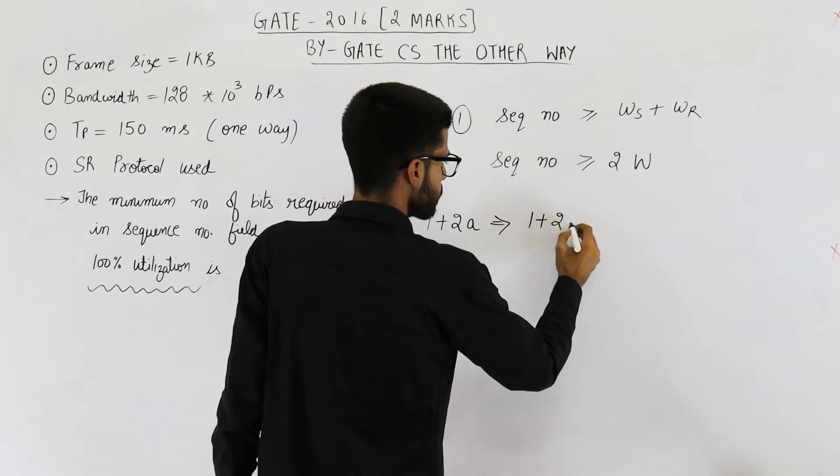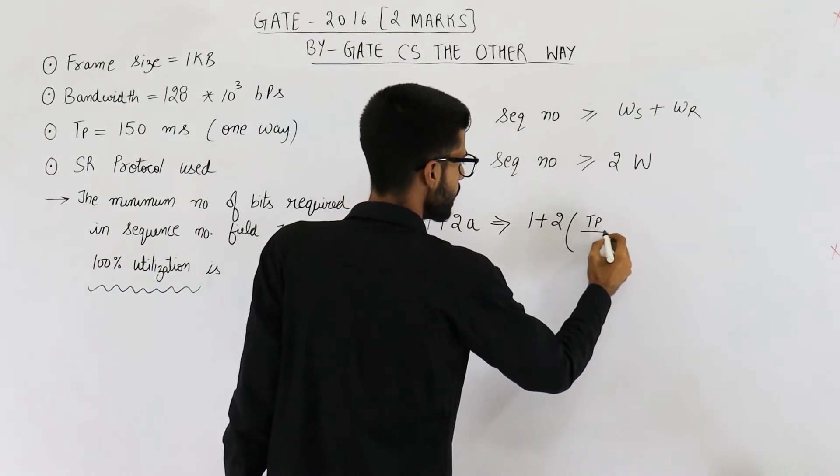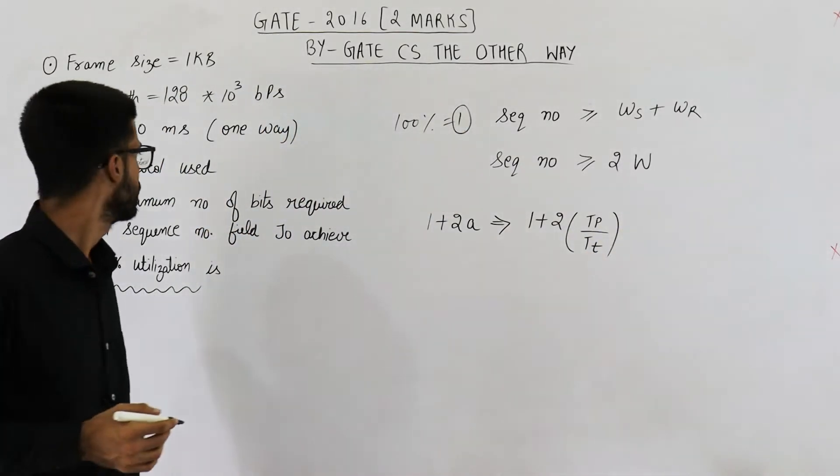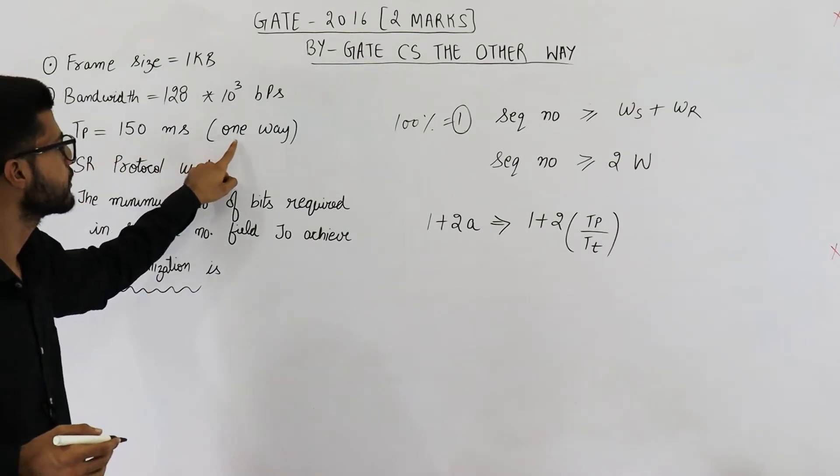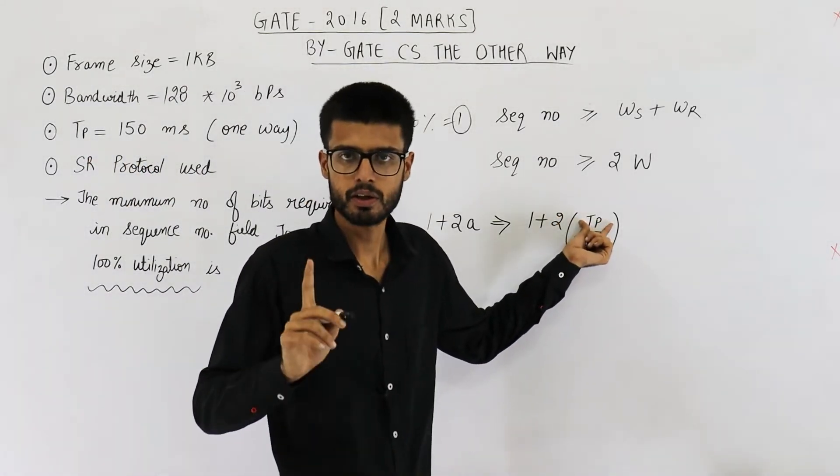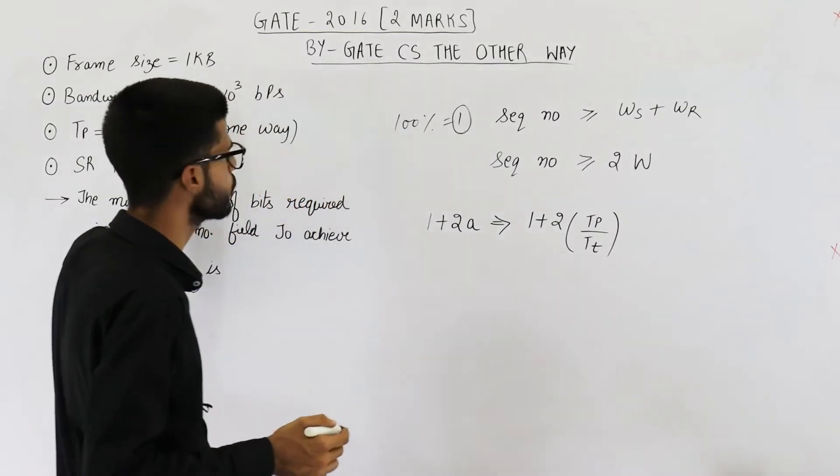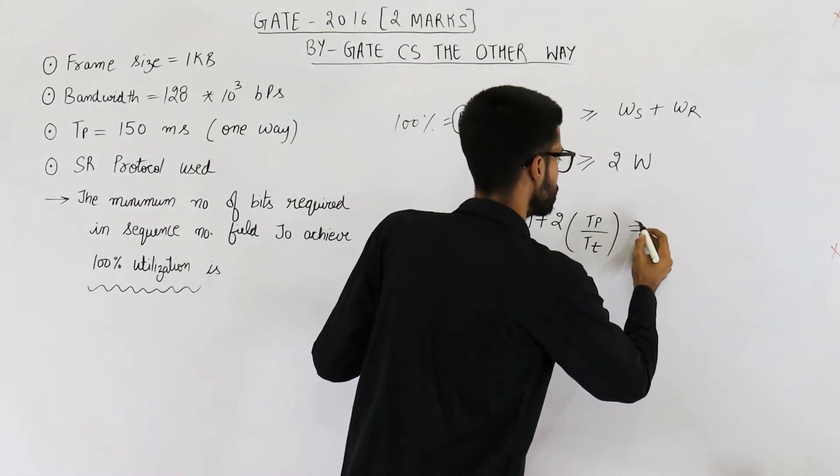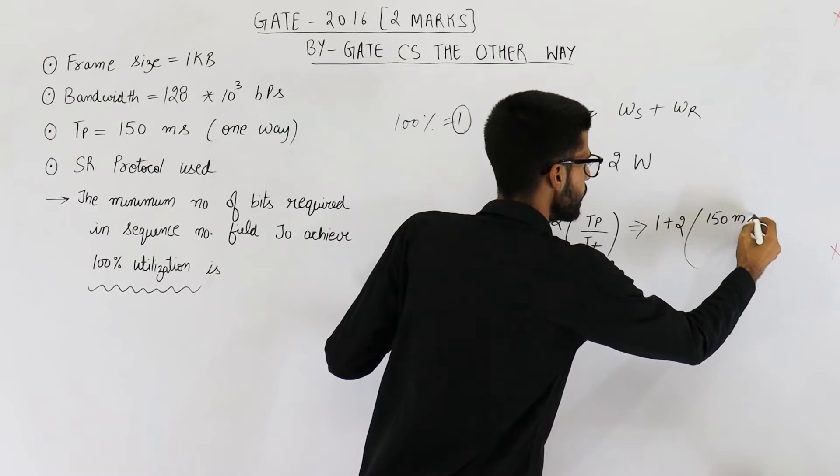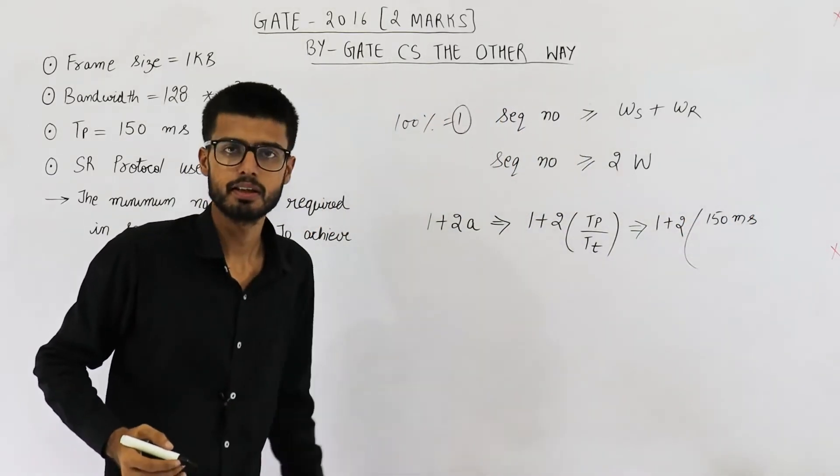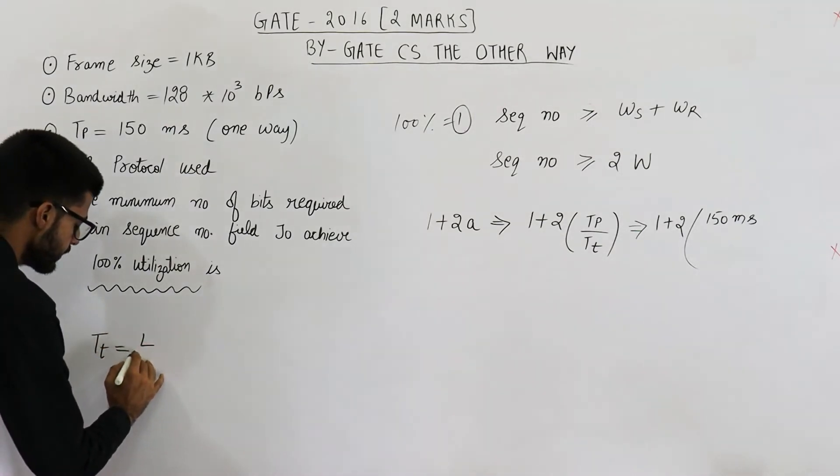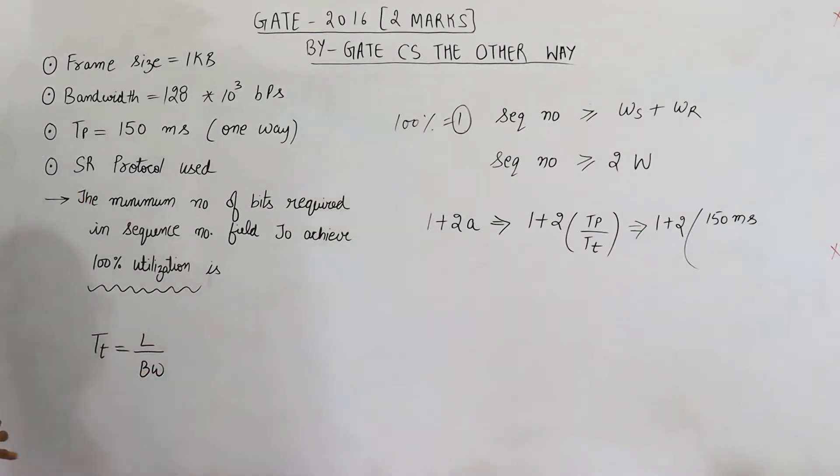Value of a is propagation delay divided by transmission delay. Propagation delay is directly given in the question which is 150 milliseconds and this is one way propagation delay. In the formula also we require one way propagation delay only. So don't multiply it by 2. It is just there to confuse you. Let us substitute this value: 1 plus 2 into 150 milliseconds divided by the transmission delay. So we need to determine what is the value of Tt.